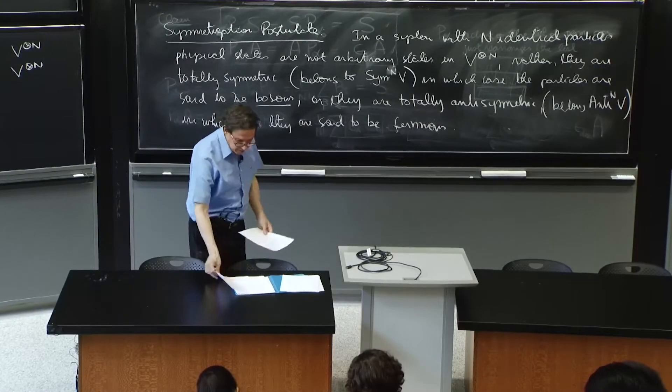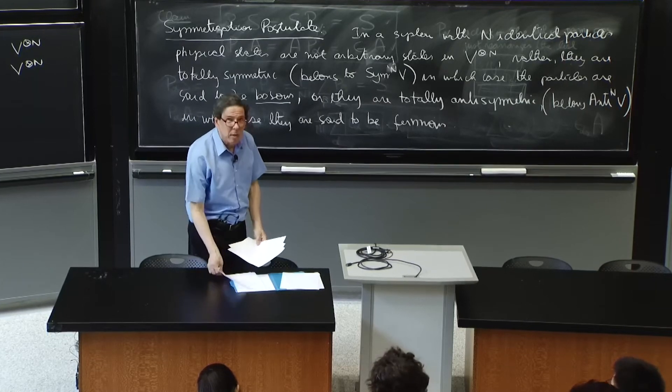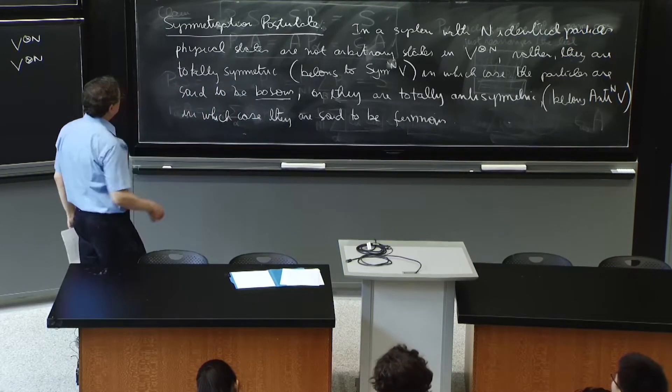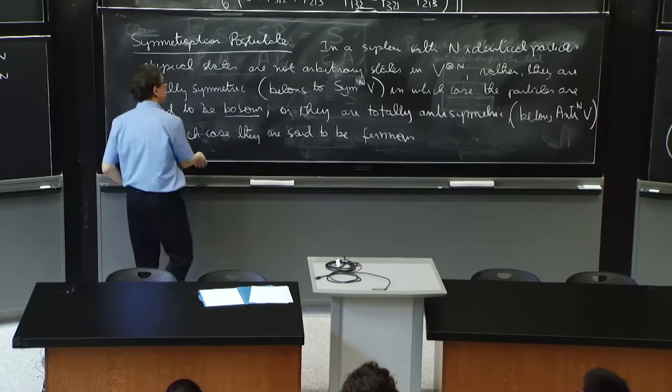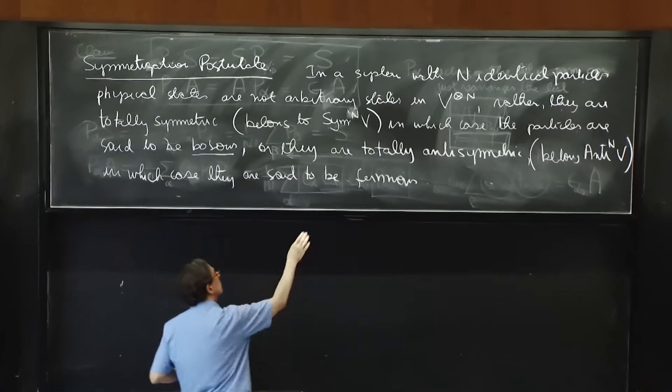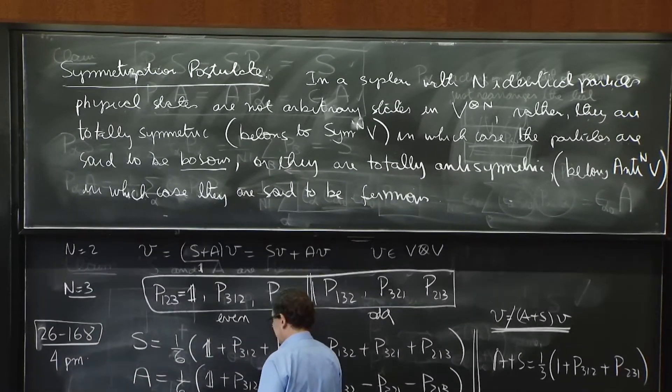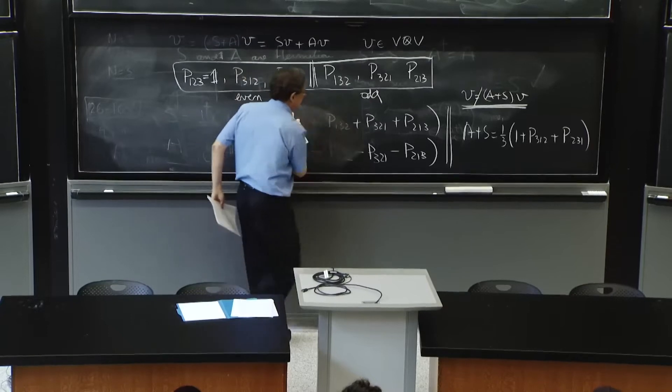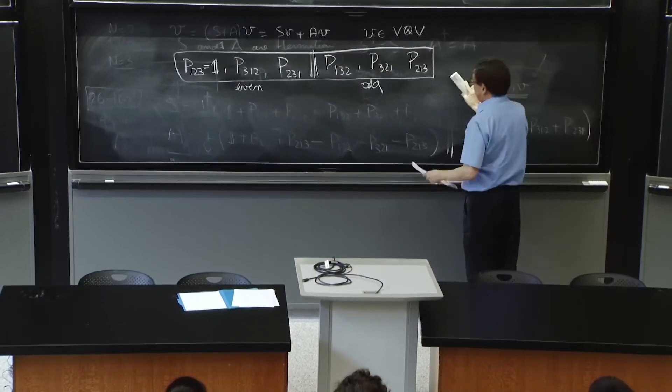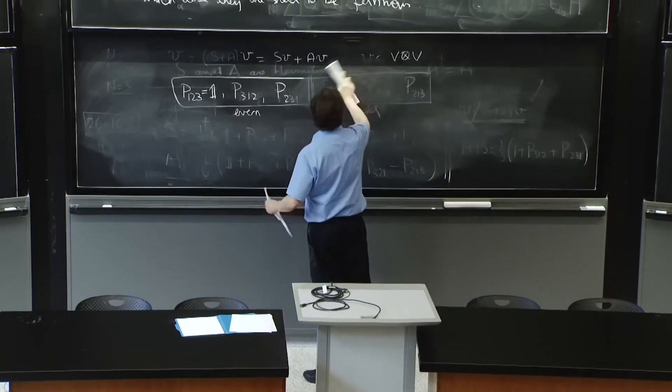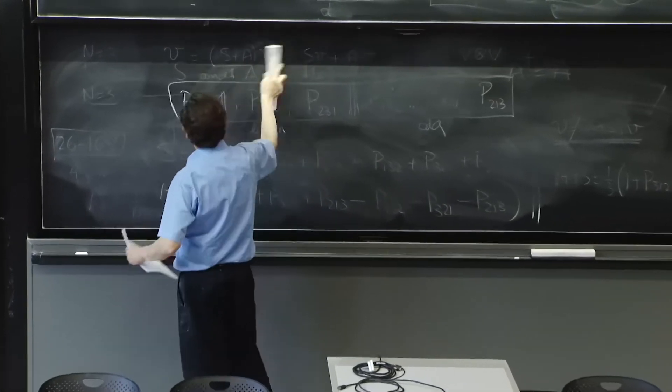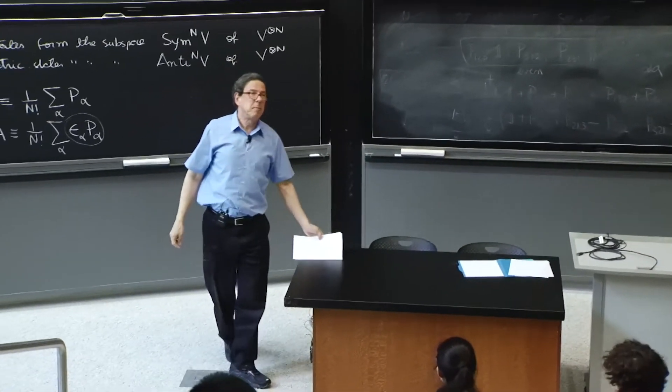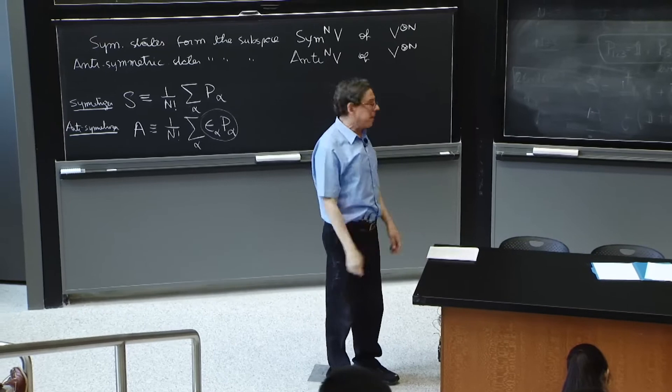It's not arbitrary states on this, but they have to become totally symmetric if they are bosons, or totally antisymmetric if they are fermions. So we have to make a few comments, and that's what will keep us busy for the next 20, 25 minutes, to understand this and see what it implies and how we use it.